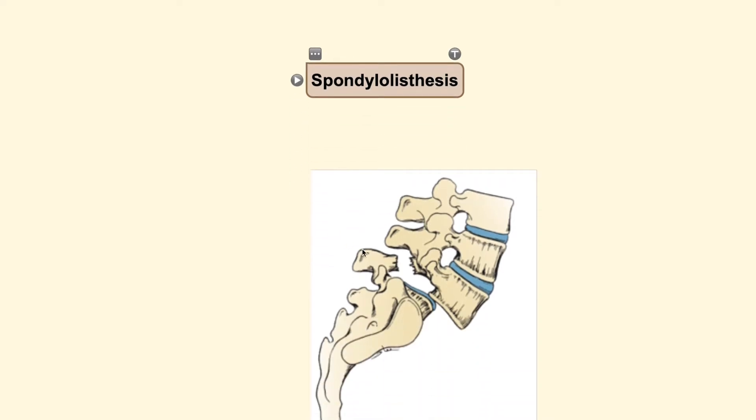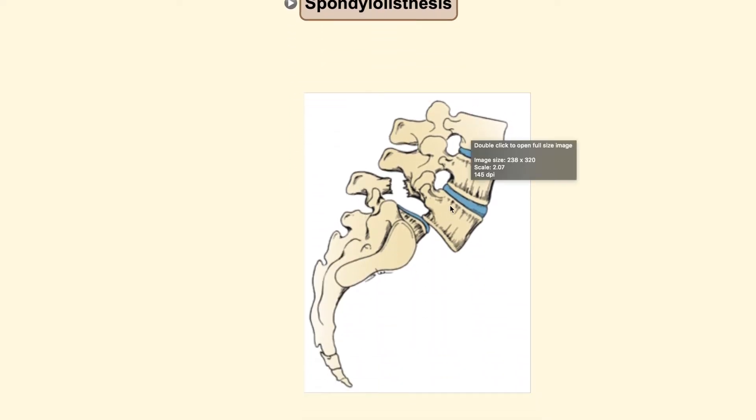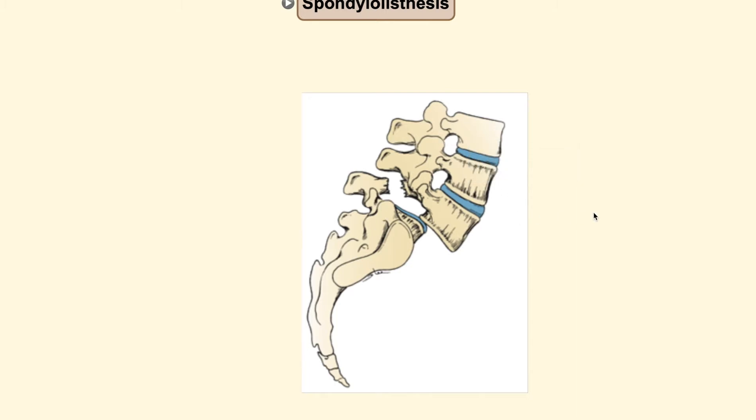As you can see here in this picture, the vertebrae is slipped out of its place and it is moving forward, leaving the posterior structures behind. This forward slippage is known as Spondylolisthesis. If the slippage occurs in a reverse direction, then one would call it a Retrololisthesis.